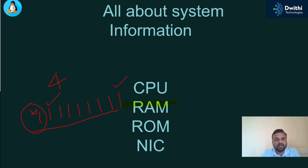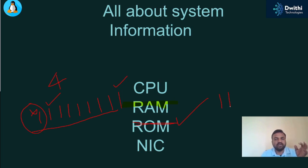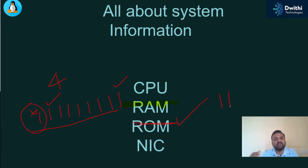ROM is nothing but permanent storage. You will be having HDD — hard disk drive — SSD, and NVMe. These are all types of hard disk. If you try to see your hard disk — 512 GB, 256 GB — these are permanent storage. Whenever you want to store your photos, videos, or any other data in your computer, it will be stored on the hard disk, and even if your computer is shut down, that data stays.